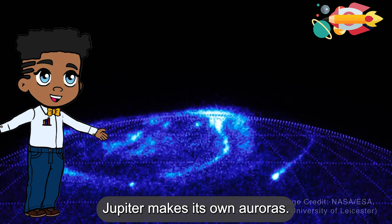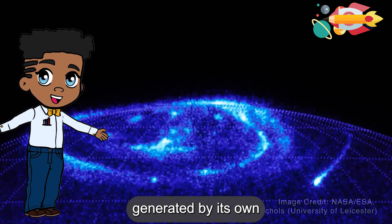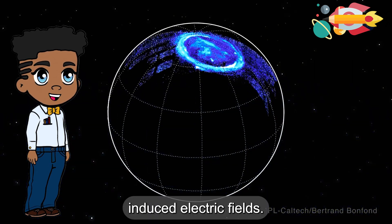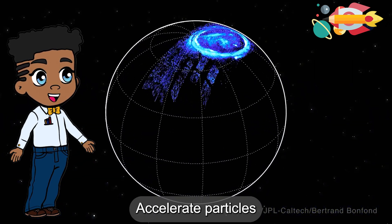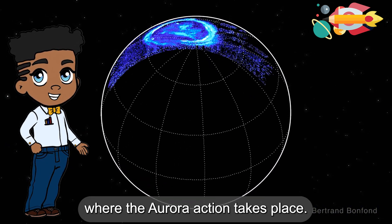Jupiter makes its own auroras. It does this by tapping into power generated by its own spinning magnetic field. Induced electric fields accelerate particles toward Jupiter's poles, where the aurora action takes place.